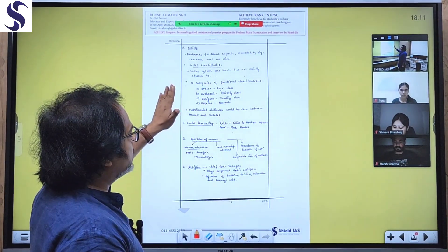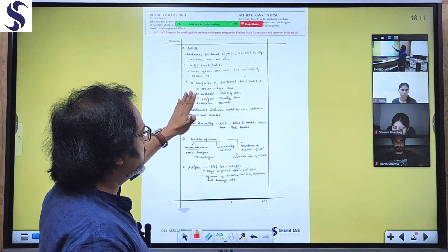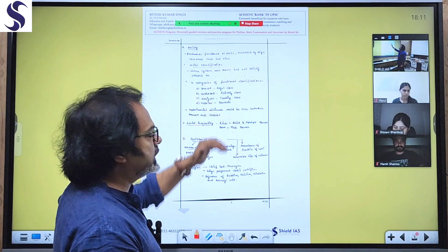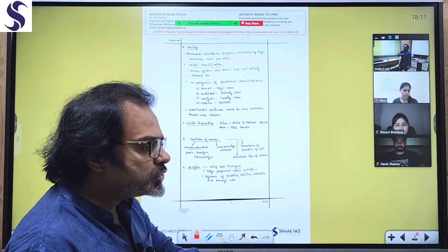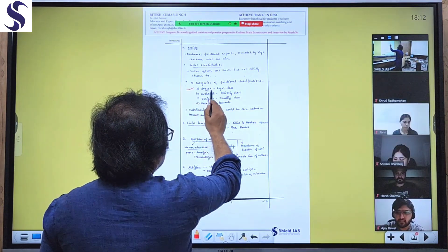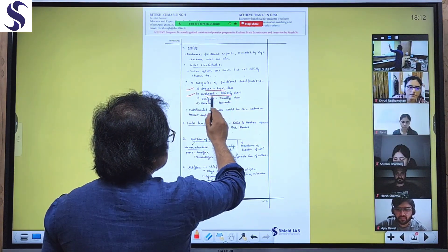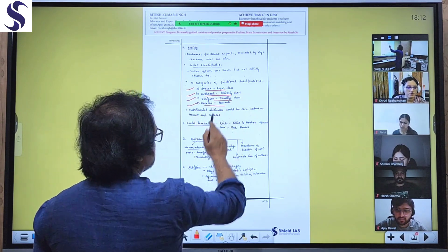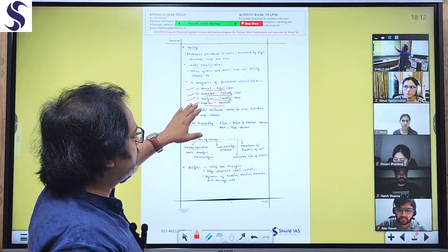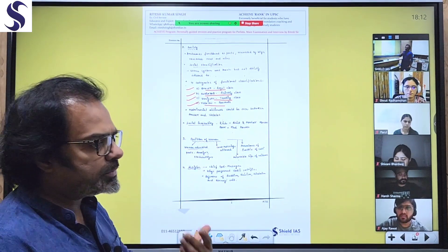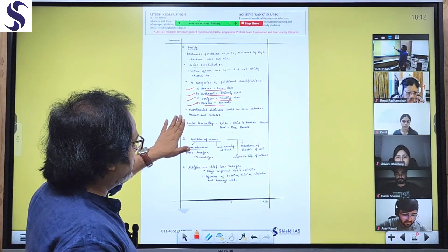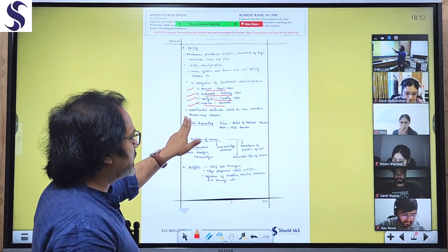Regarding society: Brahmans functioned as poets and were rewarded by kings. Consumption of meat and wine was common. For social stratification, the varna system was known but not strictly adhered to. It was the beginning of the influence of Brahmanism in south India. There were four categories of functional classification: Arasa (royal class), Anthanar (priestly class), Vanigas (trading class), and Vilalas (peasants). The classification and stratification of society is coming into picture.